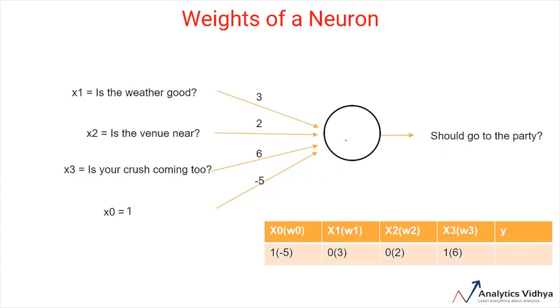For example, we have taken initially the condition where crush is more important than the weather or the venue itself. Let's say the weather is bad represented by 0 and the venue is far off represented by 0. But your crush is coming to the party which is represented by 1. When you calculate the sum after multiplying the values with their respective weights, we get a sum of 0, 0 and 6. Since 6 is greater than the threshold of 5, you will decide to go to the party.